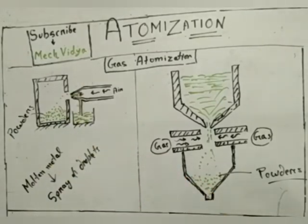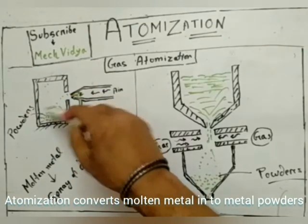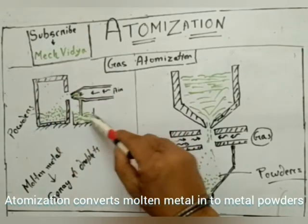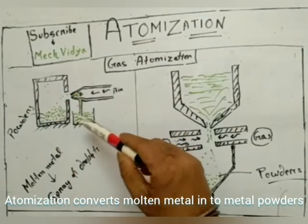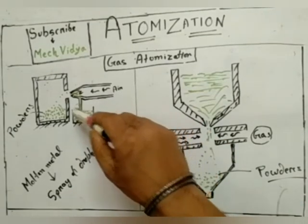The droplets are created either with the help of air or with the help of some liquid like water. Here we have a collecting chamber where our powders will be collected, and this is where the molten metal is kept. Suppose I am working with aluminum, so I'll melt my aluminum and keep it here in this storing collecting tank.